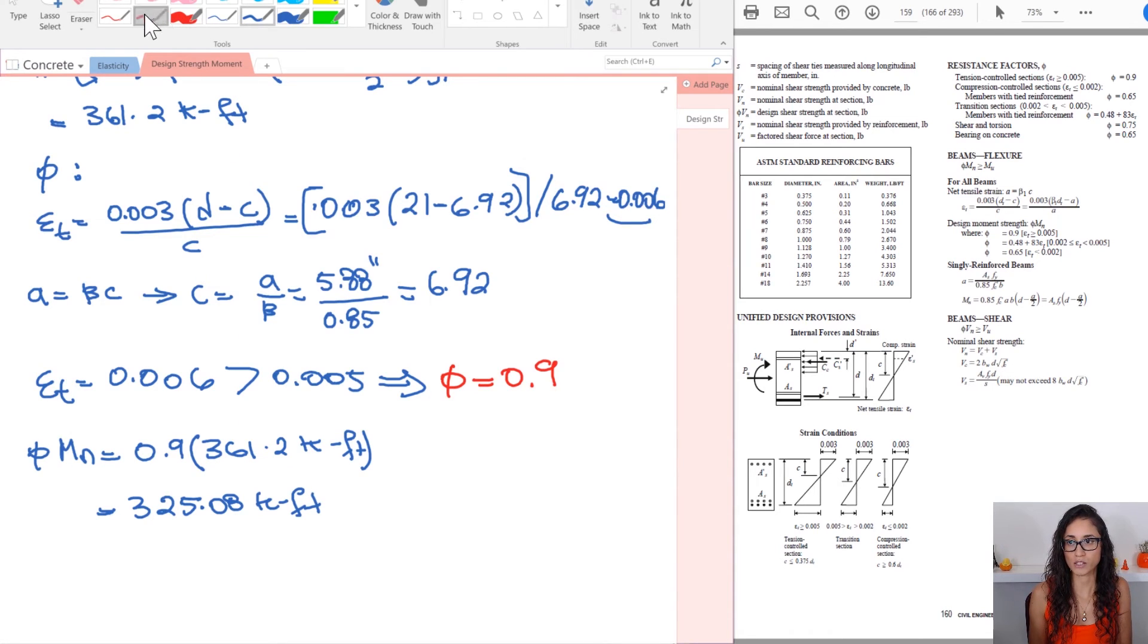I would also like to mention one more thing that when you're actually dealing with moment, make sure that your phi MN is always greater or equal to your demand capacity or the factored moment MU. This is very important. So that way that your design does not fail. That's why we always want phi MN to be greater than the actual demand capacity of the moment, of the beam that we have. So just keep this in mind. Okay guys,